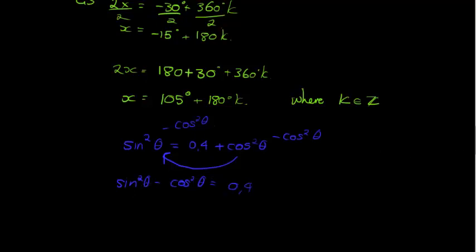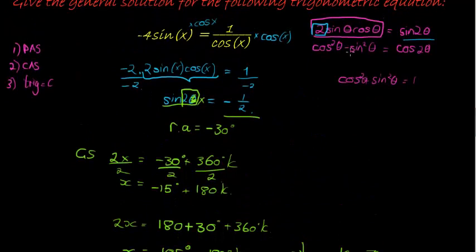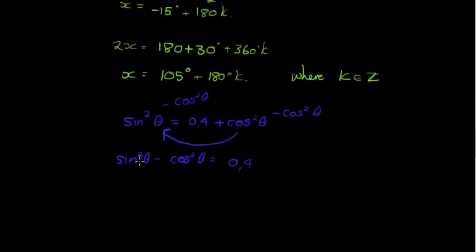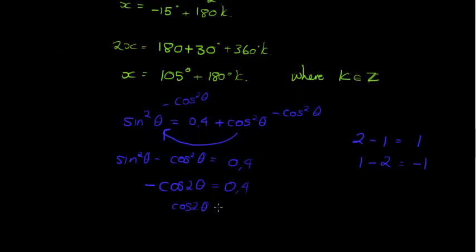Now, just be careful here. Cos squared minus sine squared is cos 2θ. Sine squared minus cos squared is obviously, it's like saying 2 minus 1 is equal to 1. Then, 1 minus 2 is equal to negative 1. Just keep that in mind. So, this will be equal to negative cos 2θ is equal to 0.4. So, cos 2θ is equal to negative 0.4.